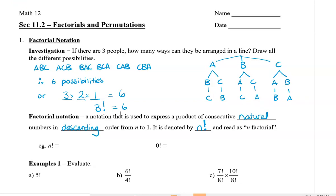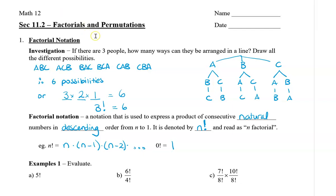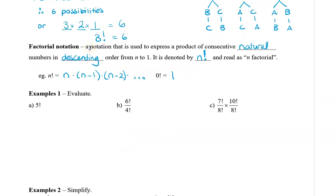By definition, n factorial means n times (n minus one) times (n minus two) and so on. Zero factorial is special — just remember that zero factorial equals one. Take some time to familiarize yourself with your calculator and find the factorial button. For example, five factorial: you could write it as five times four times three times two times one, but with your calculator just press five and the factorial button to get 120.